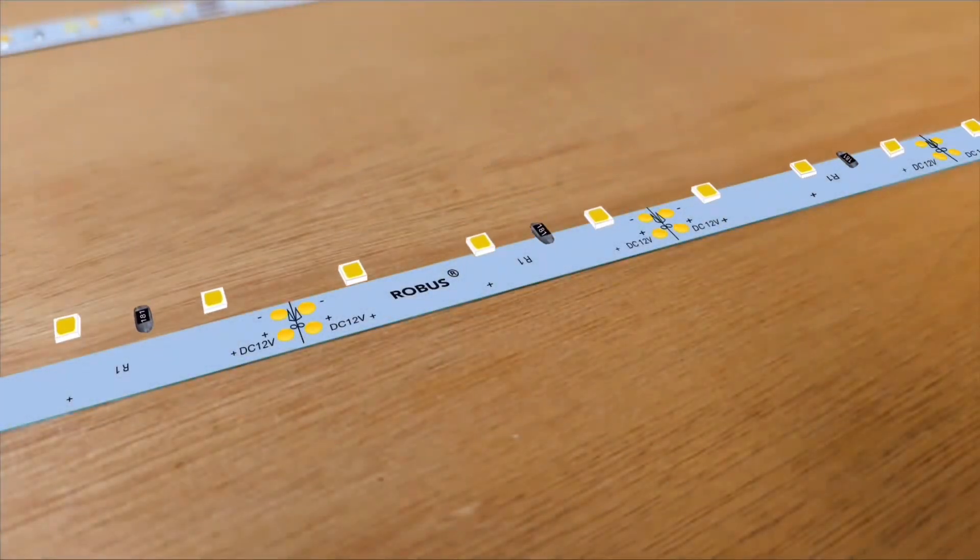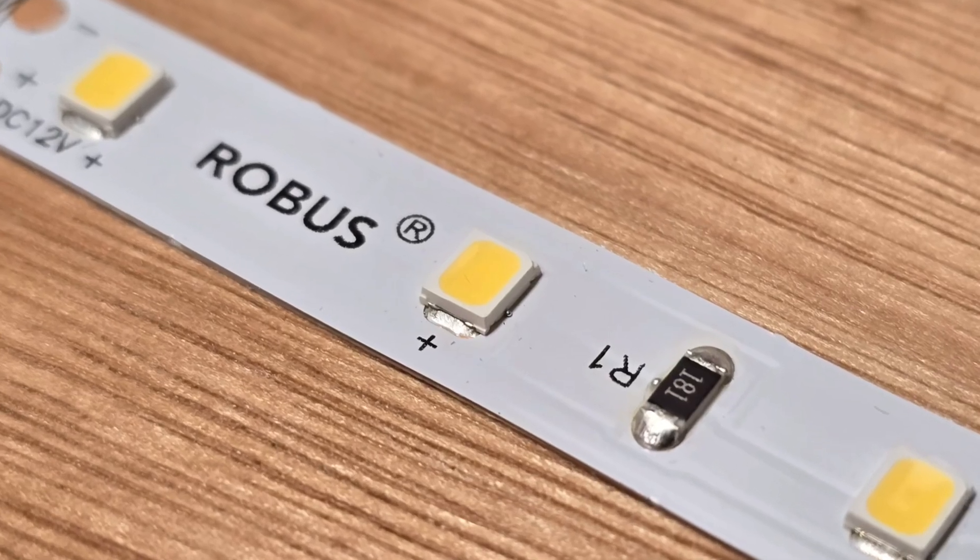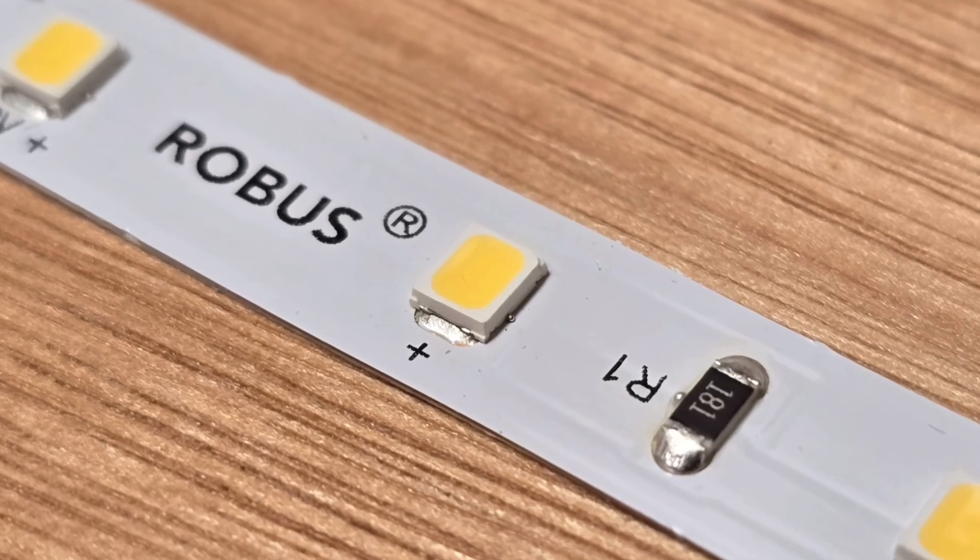Then we come to what's on the outside of the strip. Along the surface you can see there's two different components mounted on here. These are the LEDs or light emitting diodes, the bit that illuminates.